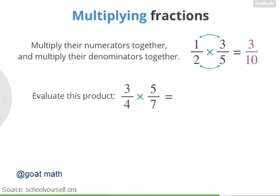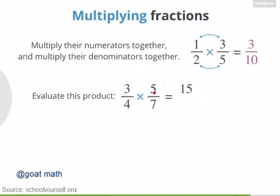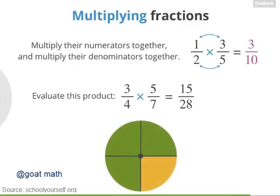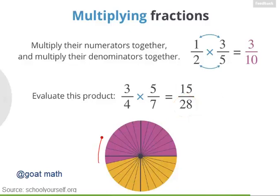Try using this trick to evaluate 3 fourths times 5 sevenths. Multiplying 3 and 5 gives you 15, and multiplying 4 and 7 gives you 28. So 3 fourths times 5 sevenths equals 15 twenty-eighths. Let's double check by drawing it out: here's 3 fourths, and we'll divide each of those fourths into 7 smaller slices. Taking 5 sevenths of the green portion — splitting into 7 equal regions and keeping 5 — gives a purple region. There are 28 slices total and 15 are purple, confirming 15 twenty-eighths.